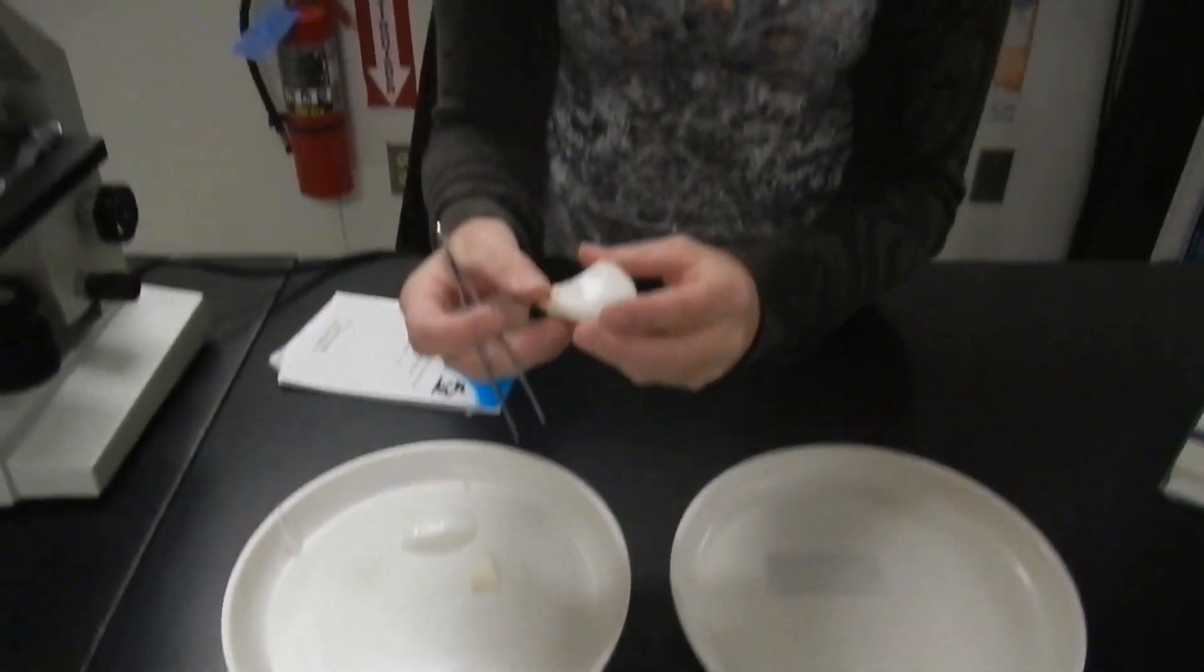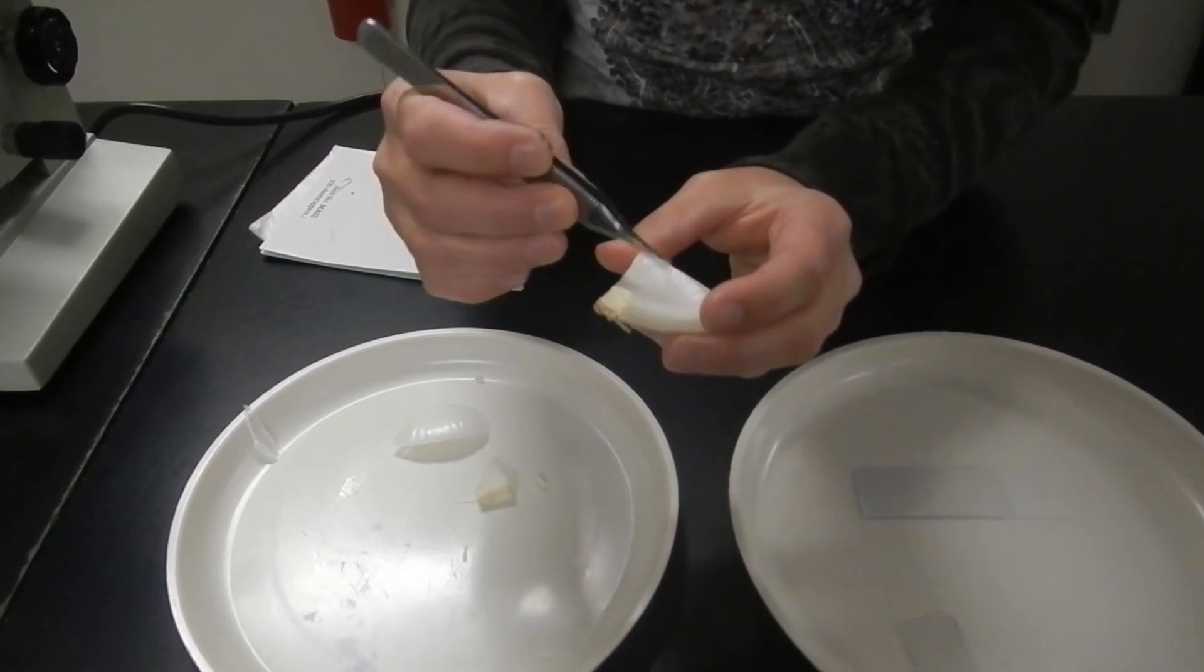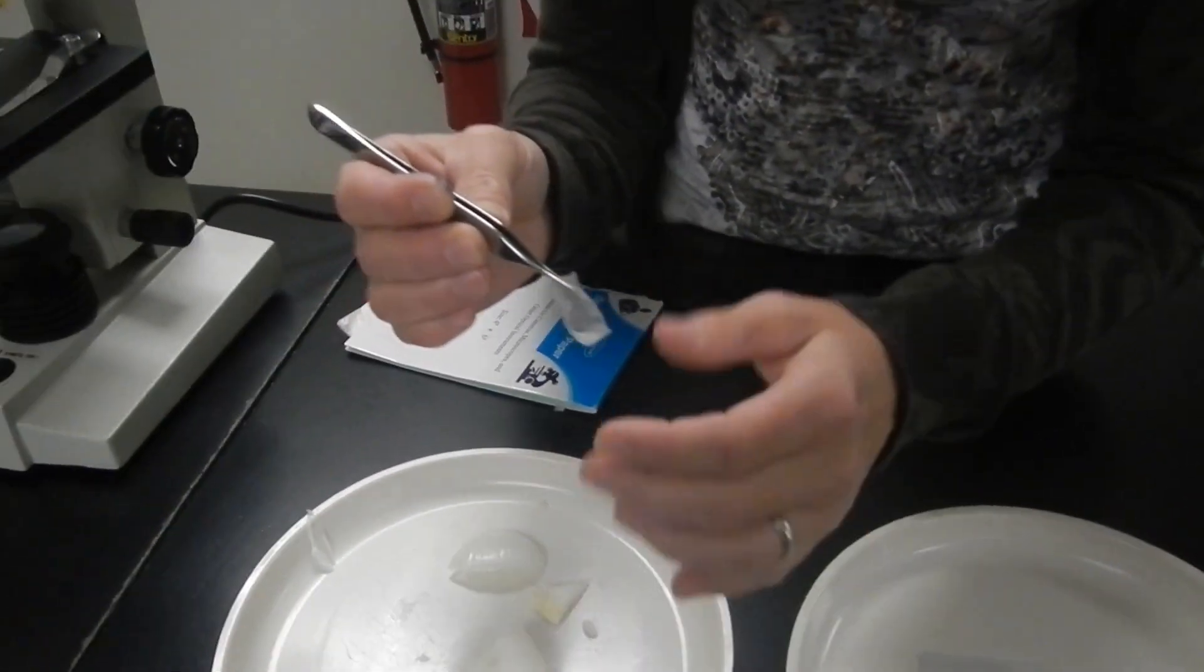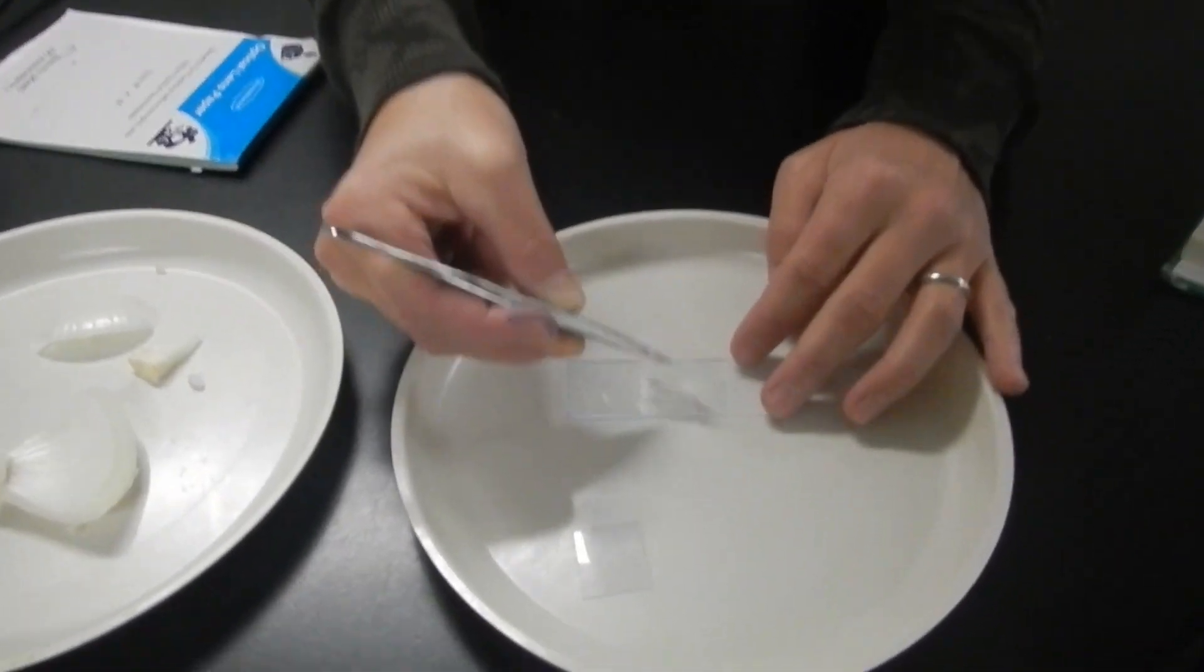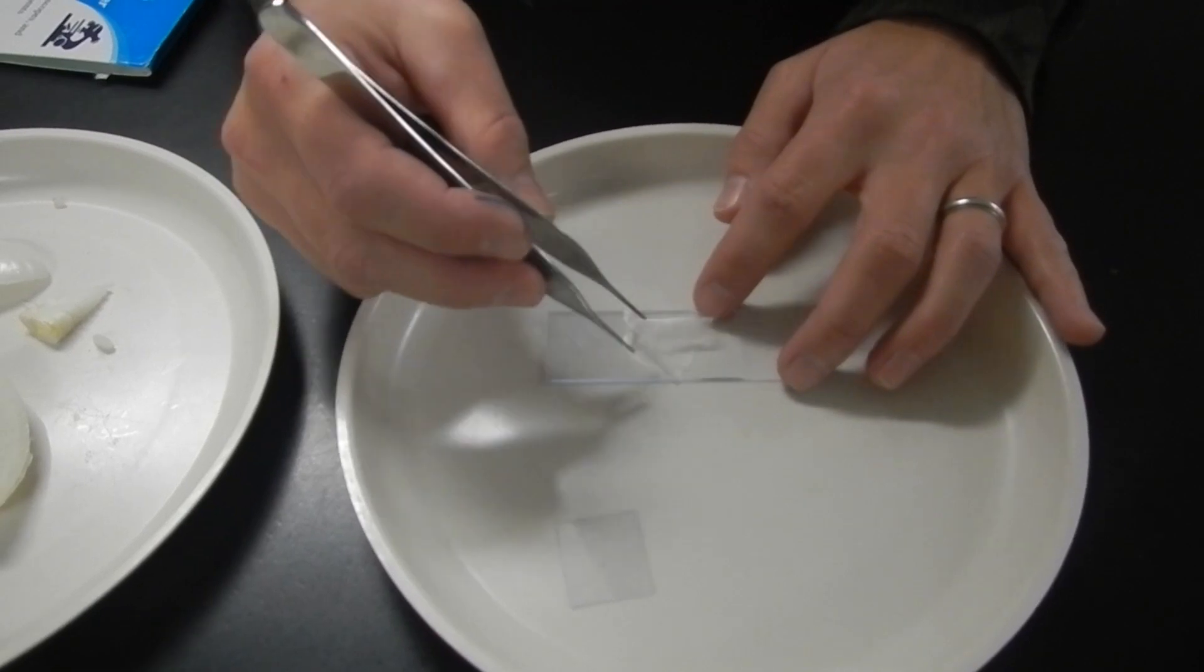Today we're going to be making onion cell slides and staining the cells in onion. So what I want to do is get a very thin piece of onion skin, and once I get that thin piece of onion skin I want to place it onto my slide and try to get it on there as flat as I possibly can.